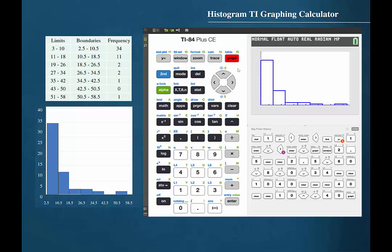The calculator will display the lower and upper bounds and frequencies for each class by pressing trace. Note now that the minimum and maximum values for the first class are 2.5 and 10.5 respectively. Note also that the frequency is given as 34. Press the right cursor to advance to the next class in the histogram. Again, the lower and upper bounds and frequency for that class are displayed.